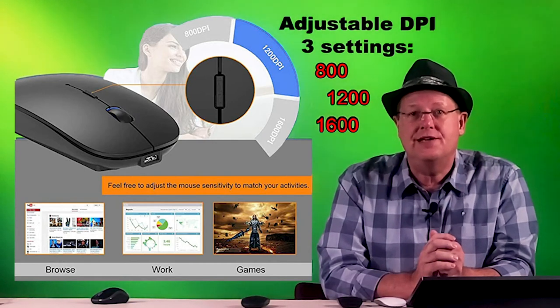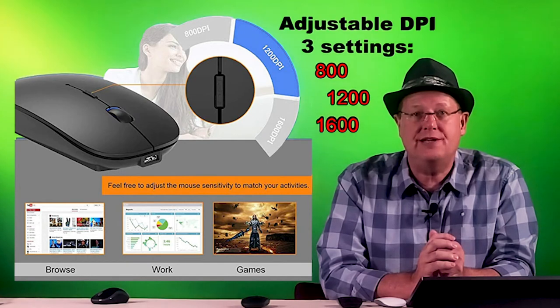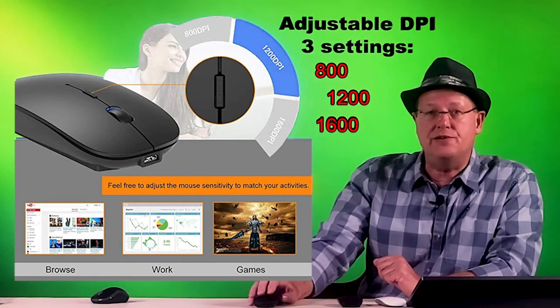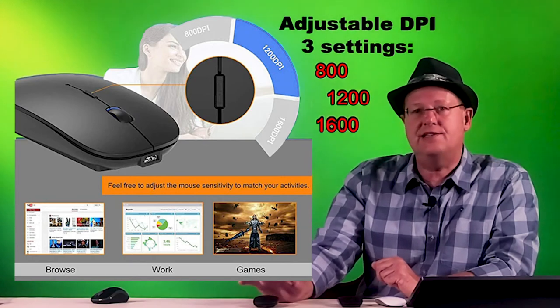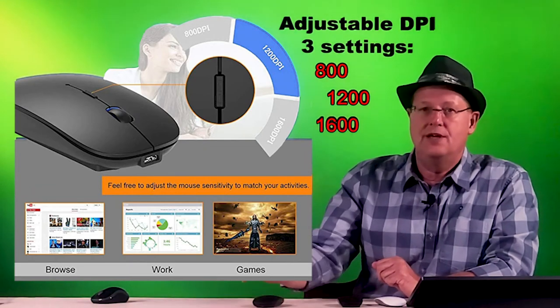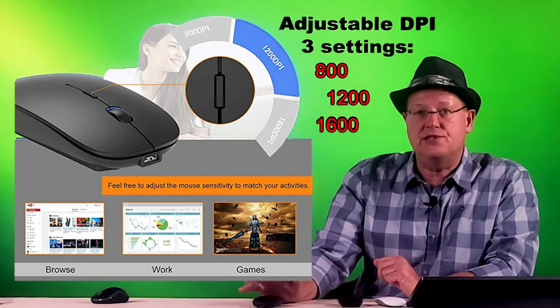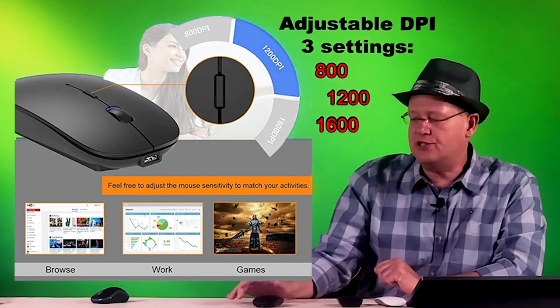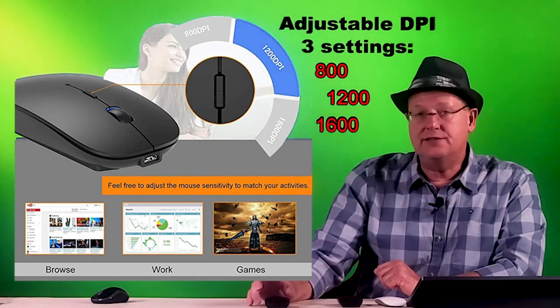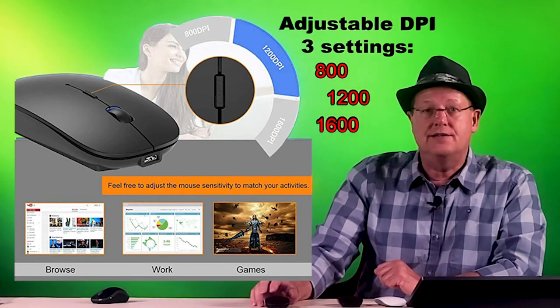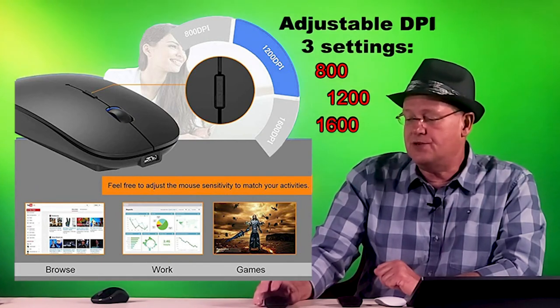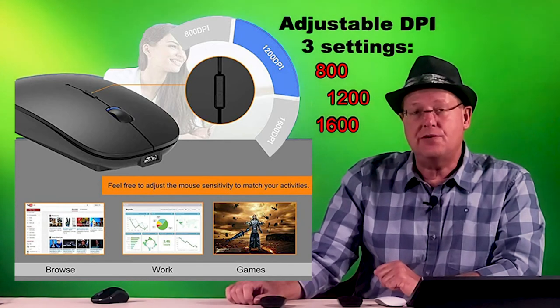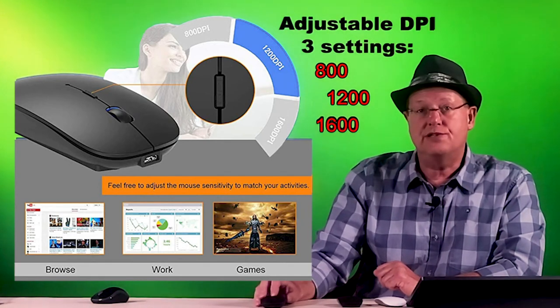Another really nice feature is you have an adjustable sensitivity or dots per inch setting, and this is done right on the mouse. You can always go into the settings of your computer, but it's not really easy to just go in and set this as I'm doing different things. But this button right here, a simple press of this button allows you to change between 800, 1200, and 1600 dots per inch when you're using it. If you're browsing, maybe you want to slow that down so you have to move more. When you're gaming, you can dial that sensitivity up just with a simple click of the button.